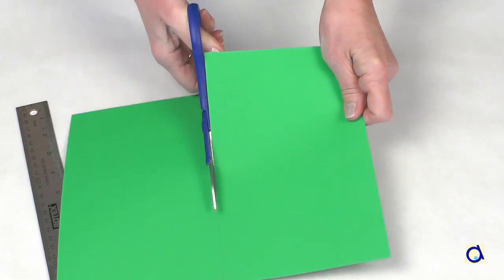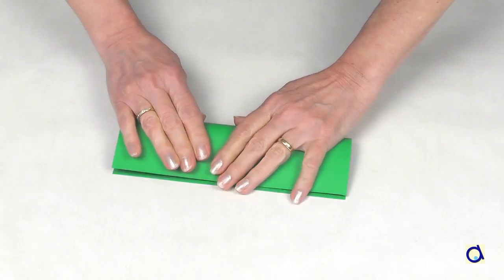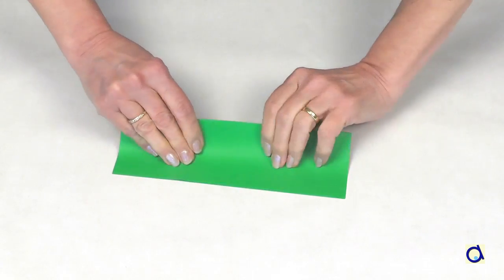Take half a sheet of green construction paper. Fold the sheet in half lengthwise and then fold the folded sheet again in two.